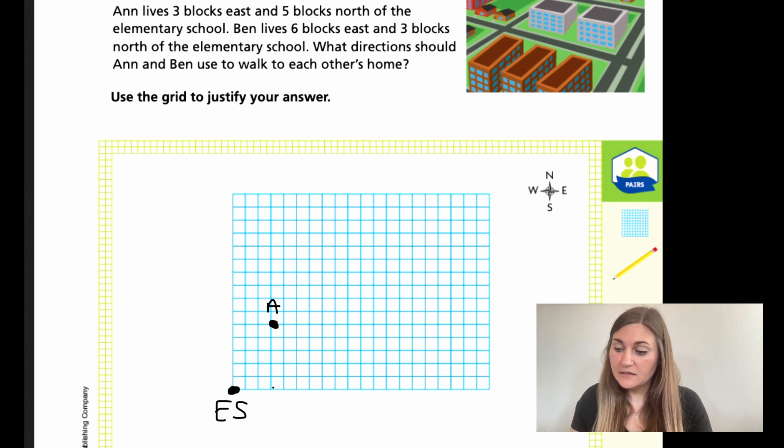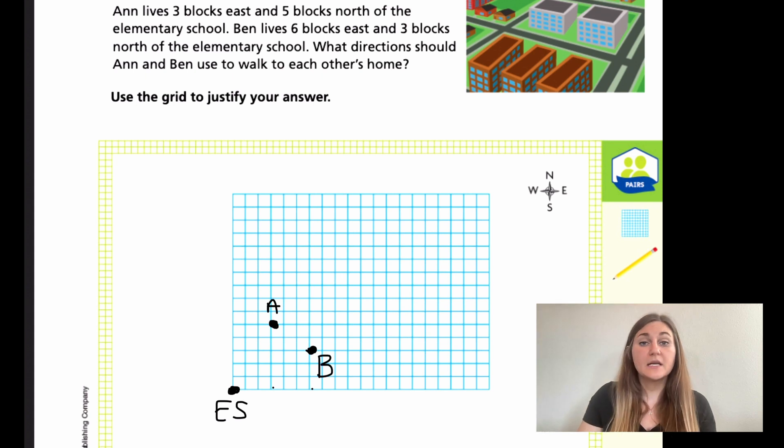Now it says that Ben, he lives six blocks east and three blocks north from the elementary school. Not from Ann's, but back from the elementary school. So we're starting over at our original point. Ben lives six blocks east, still going to the right, but now we're going six jumps. One, two, three, four, five, six. From that spot, it said three blocks north. So now I'm only going three up. One, two, three. This spot right here is going to be Ben and I'm going to mark it B.